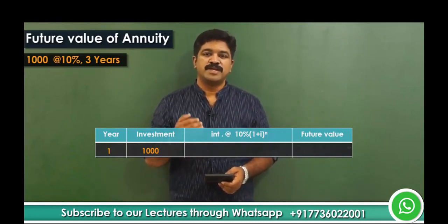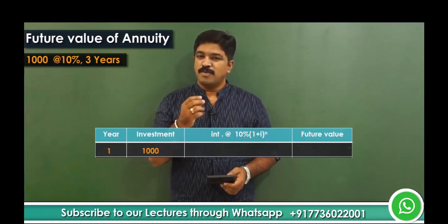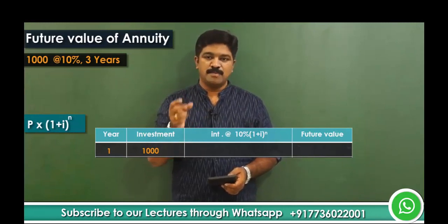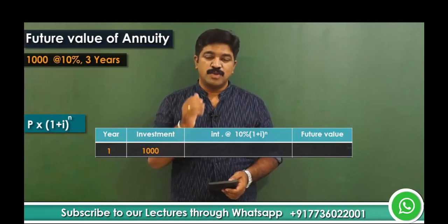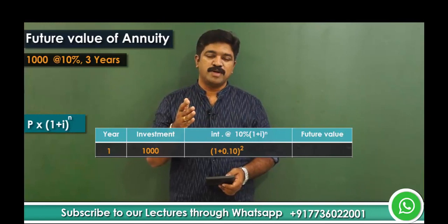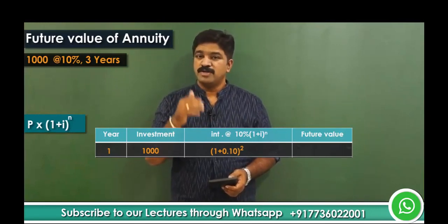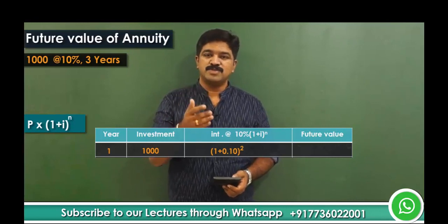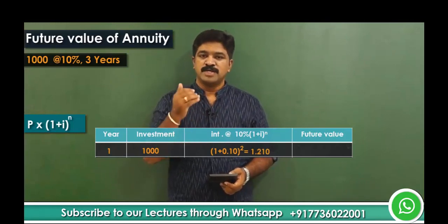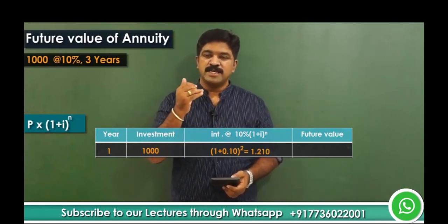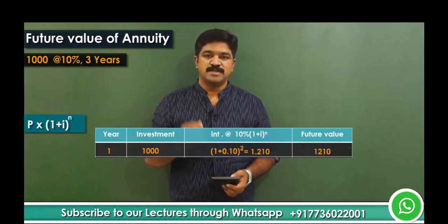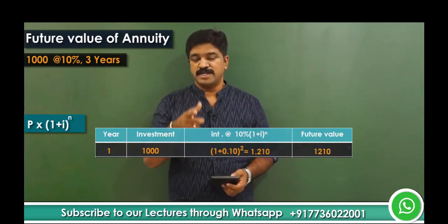So how do we find the future value? It's simple. The formula for future value is P multiplied by (1 + i)^N, where the interest factor (1 + i)^N handles the compounding. Here, interest is 10%, so it's 1.10 raised to the power 2, which equals 1.21. So 1.21 multiplied by 1000 gives 1210 — that is the future value of 1000 invested at the end of year 1.